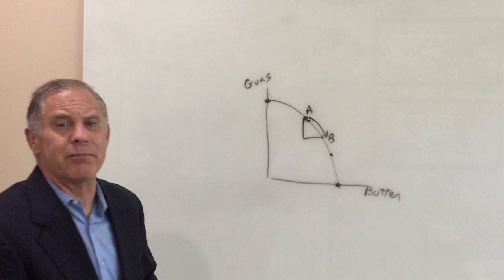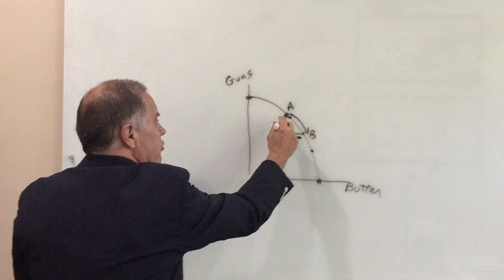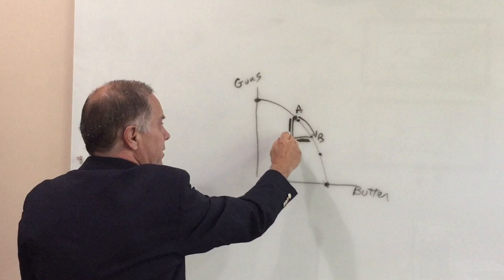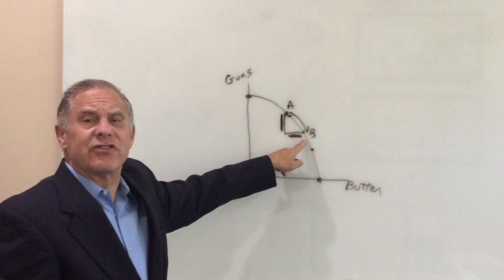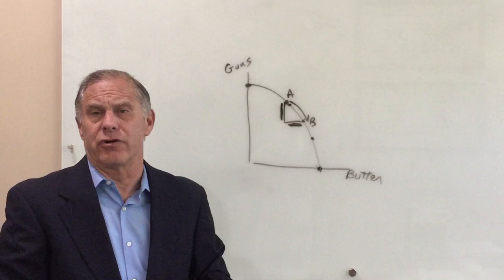Now, one other concept to conclude with. Look at what you give up. Remember we talked about opportunity cost? Opportunity cost is what you give up to get something. In this case, to get that much more butter, you give up that much guns. So, opportunity cost is what you give up to get something. And the production possibility curve actually shows you a way to measure the opportunity cost of making a move or a change.